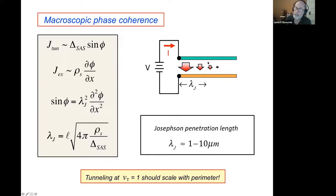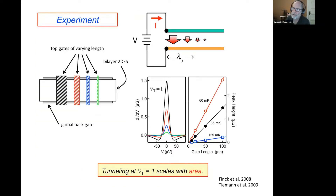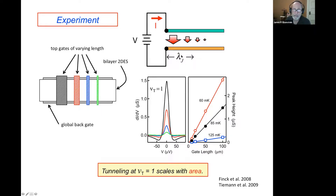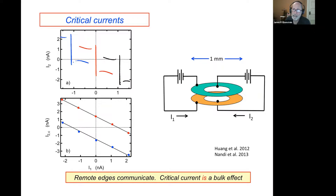That would mean, for a device 200 microns long and a corbino ring a millimeter in diameter, tunneling would be stuck within a micron of the source and drain contacts — scaling with perimeter, not area. We got interested in this and measured whether tunneling scaled with area or perimeter. It turned out it scaled with area, and the von Klitzing group came to the same conclusion. Whatever this picture is, λ_J is bigger than the device even though estimates say it shouldn't be — a surprise.